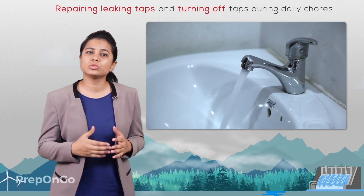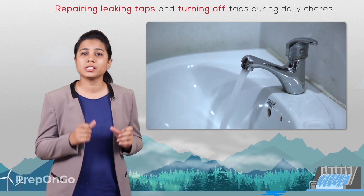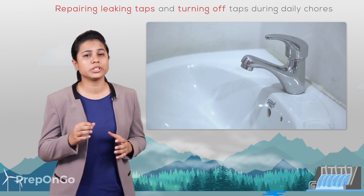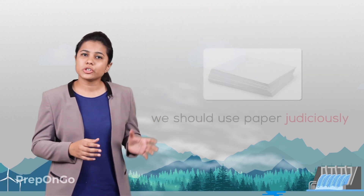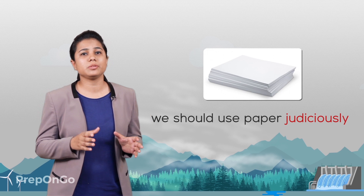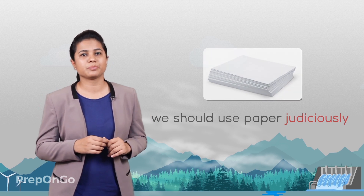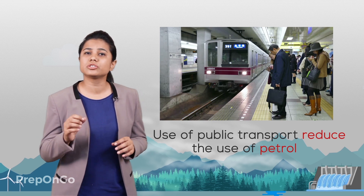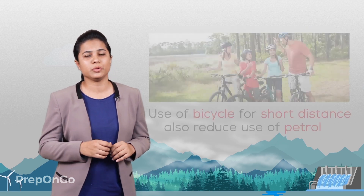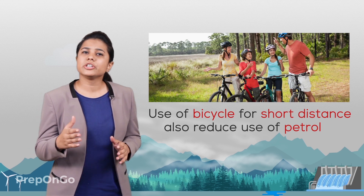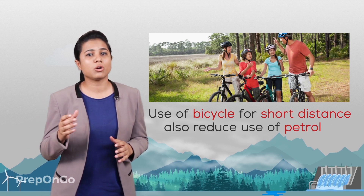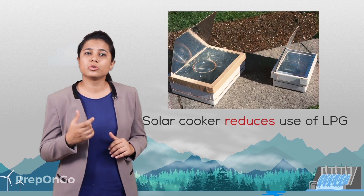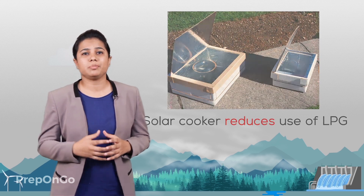We can reduce the wastage of water by repairing the leaking taps and also turning off the taps when they are not in use during the daily course. We should use paper judiciously by using both sides of the paper. Use of public transport like buses and trains instead of cars can also reduce the use of petrol. Using bicycles for nearby distances or neighbourhood can also reduce the use of petrol. Using solar cookers for cooking food can also reduce the use of LPG.